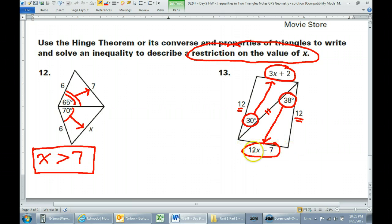Hopefully you were saying that the 12x minus 7 is bigger. Why? Because it's across from the bigger angle. 38 degrees is bigger than 30 degrees.